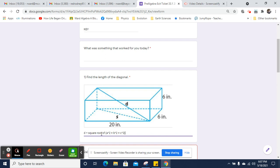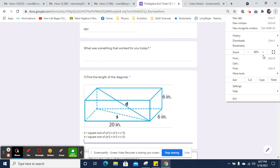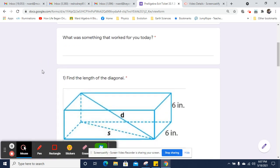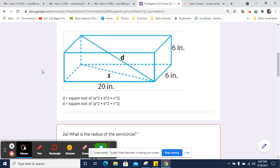We're going to get the square root of all that. So let's see what that all is going to equal. So let's say a is the length, so that'll be 20 squared, and b will be the width, so that'll be 6 squared, and c will be the height, so it will also be 6 squared.